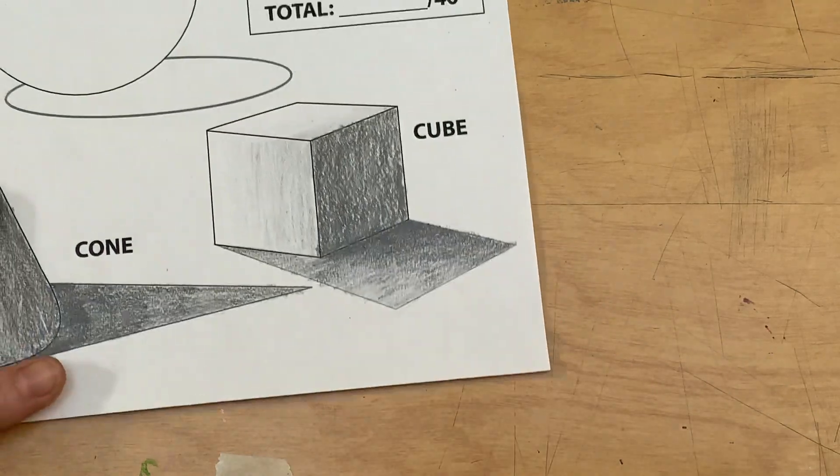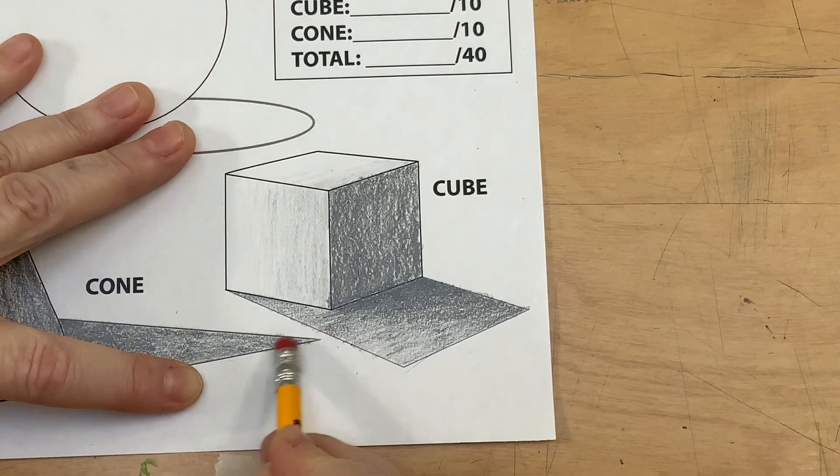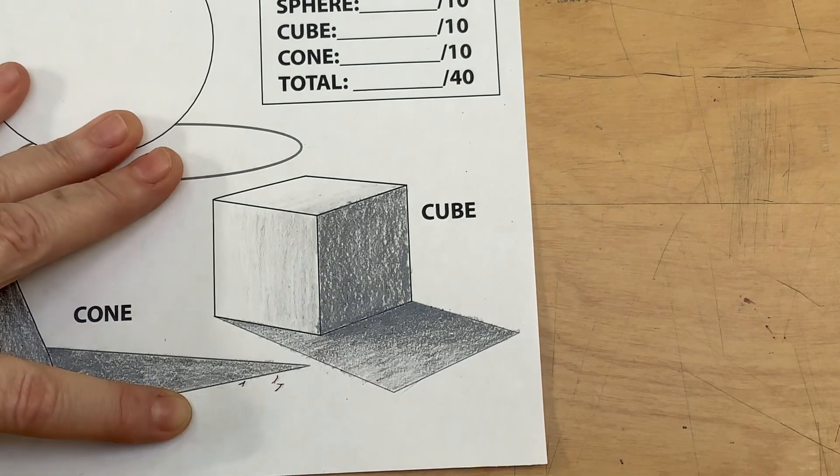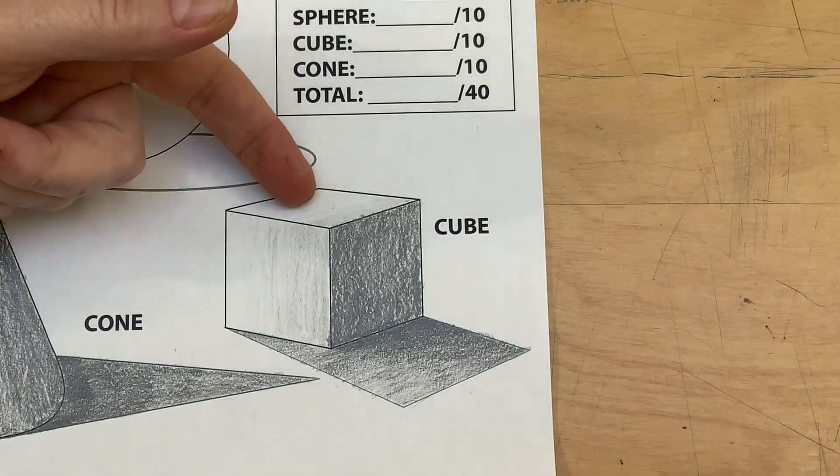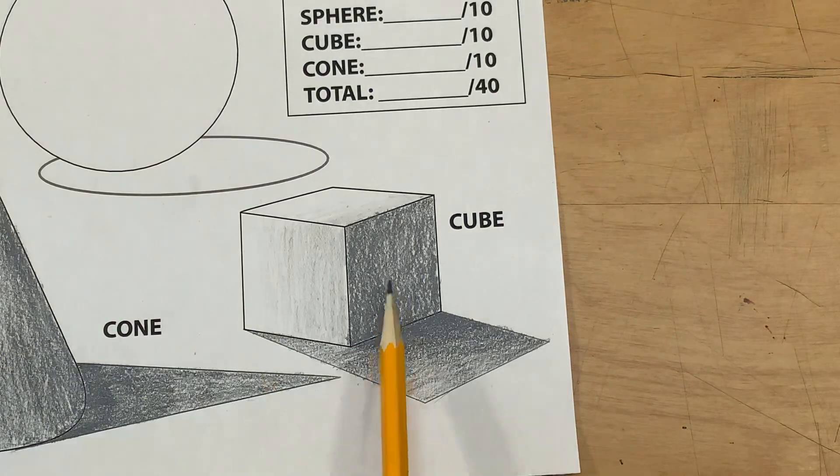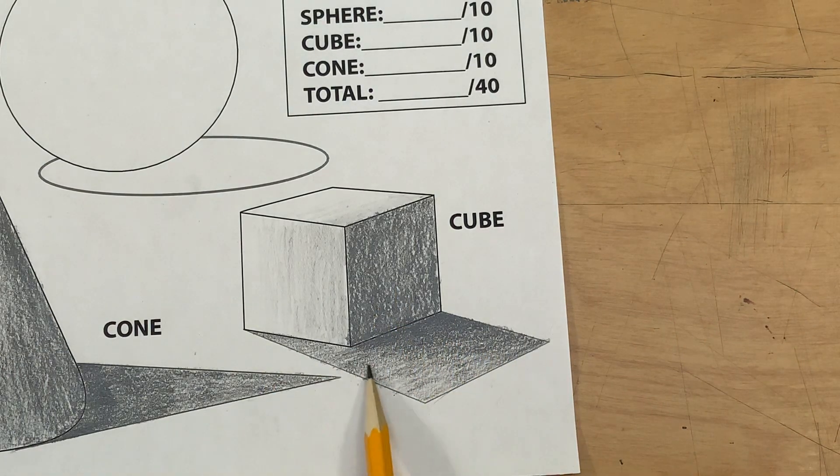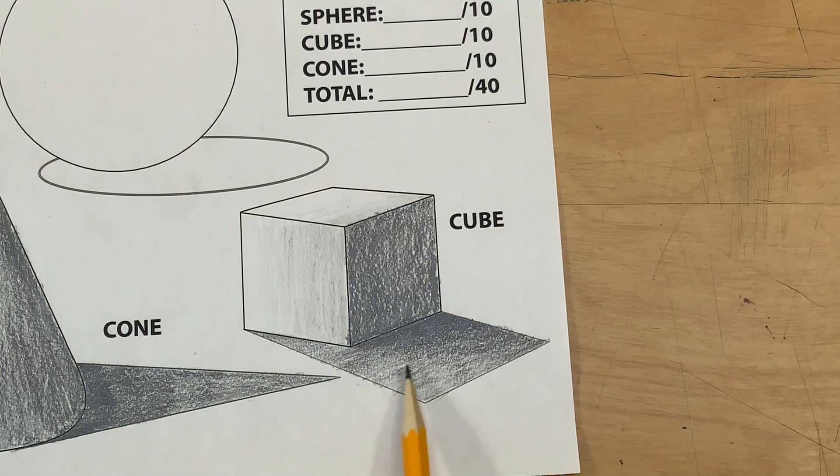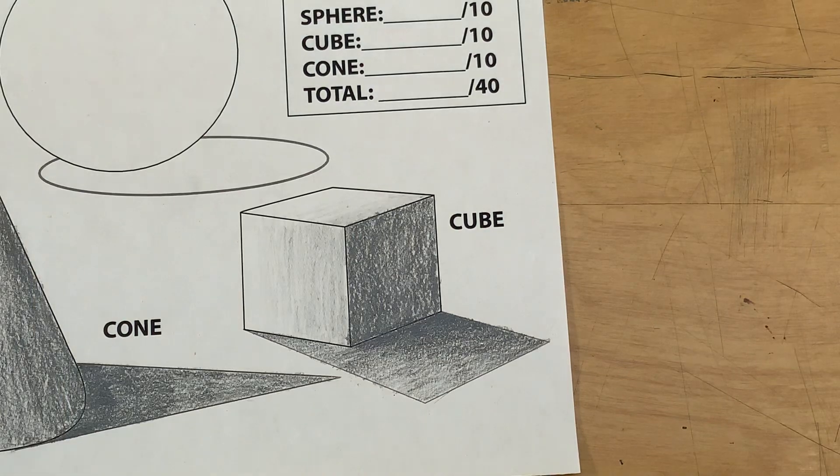So there is our finished cube. And again, you can always come in here and erase any edges that kind of happen. So super light H's, two different kinds of H's here, 4B, 6B, fade it out to 4, really light, fade it into 2B, really light. And there you have your cube.